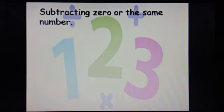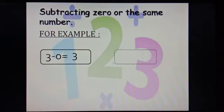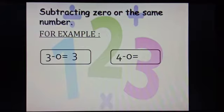Subtracting 0 or the same number. We can subtract 0 from a number. When we subtract 0 from a number, we get the same number. But when we subtract a number from the same number, we get 0. For example, 3 minus 0 equals to 3. The next example is 4 minus 0. Tell me, what will the answer be? Yes, 4.